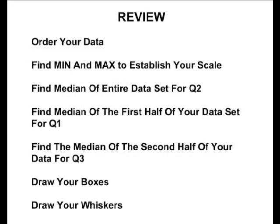So in review, when creating a box and whisker plot, you first must order your data. After ordering your data, find the minimum and the maximum to establish the scale. Then find the median of your entire data set to establish where Q2 is located. Then find Q1, which is the median of the first half of your data set, and Q3, which is the median of the second half. Now that you have established the five important points, draw your boxes and add the whiskers on either end of your interquartile range, and you have your box and whisker plot.